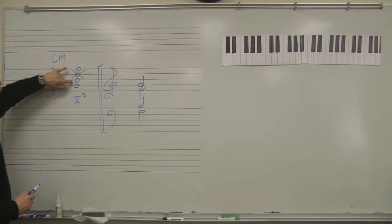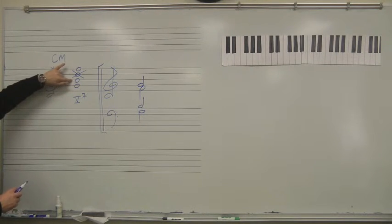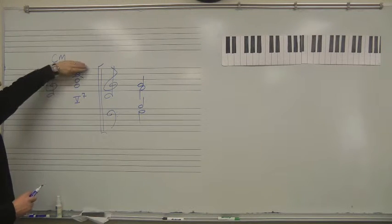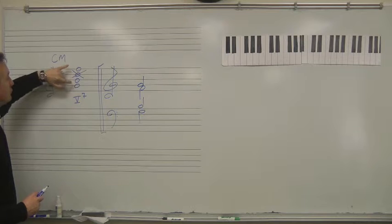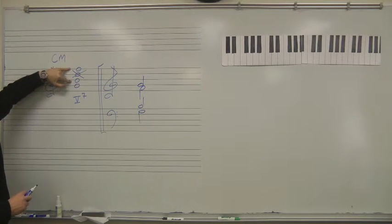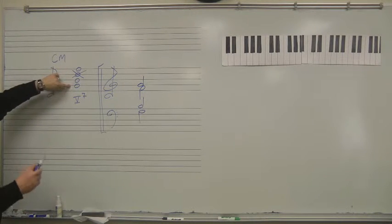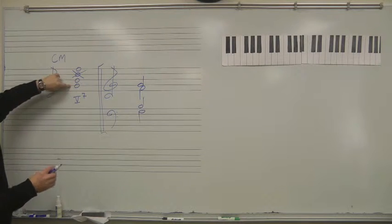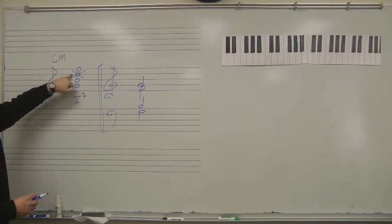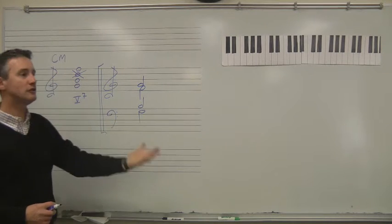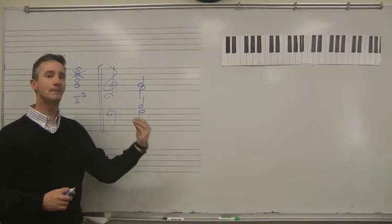You would not tend to drop out the third of the chord because it helps to define the chord. You really can't drop the seventh out, or else it's not a seventh chord anymore. Those two notes really have to be in. The root of the chord is pretty important for helping to establish the context of this chord. It's the fifth of the chord that's the one note that, in certain circumstances, could be dropped out.